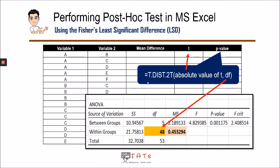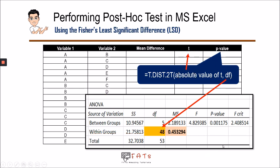The last information needed is the p-value, which we compute using this formula in Microsoft Excel: T.DIST.2T, followed by two arguments. The first argument is the absolute value of the t-critical — negative values are not allowed, only positive values. The second argument is the degrees of freedom, which can be found in the ANOVA table under the df column in the Within Groups row. In this example, that is 48.